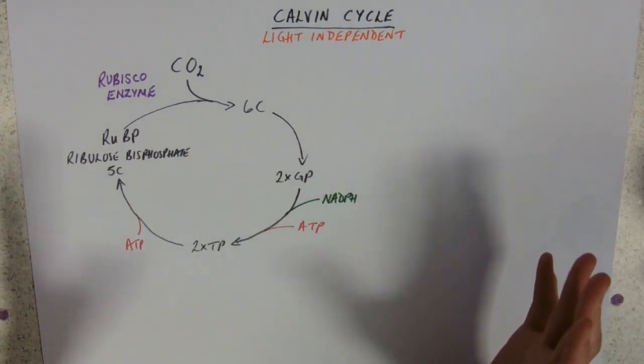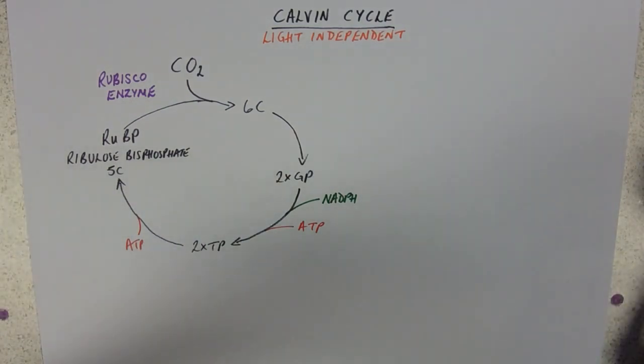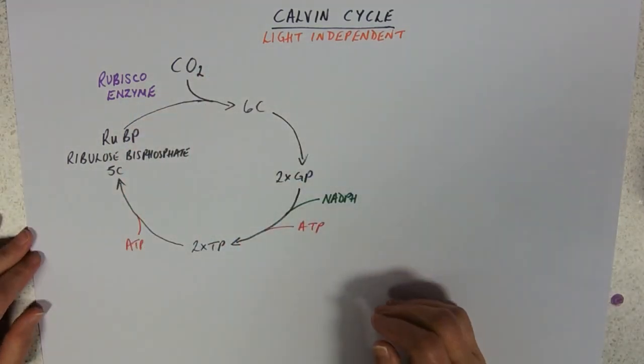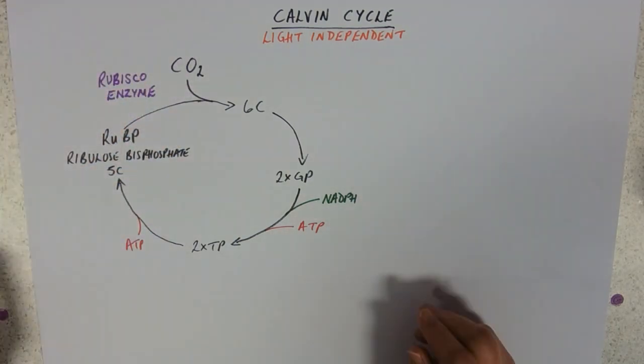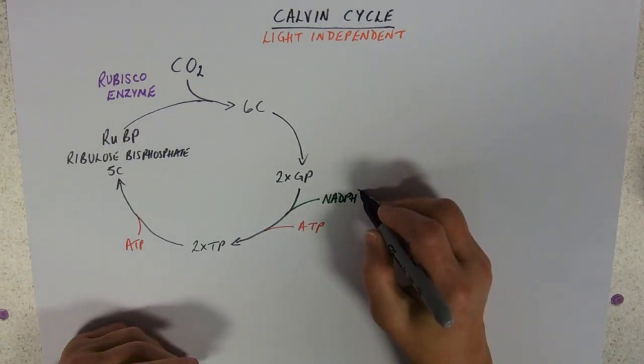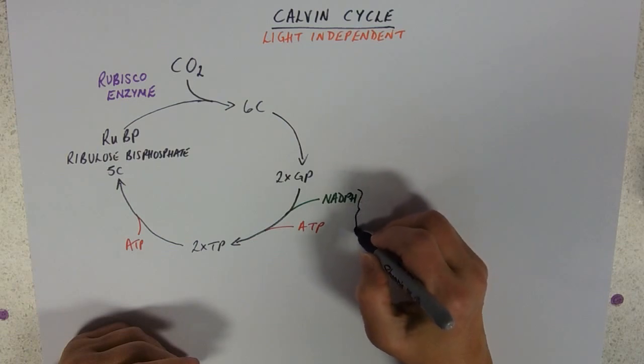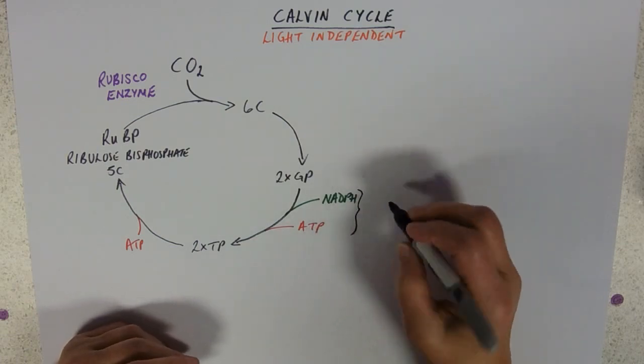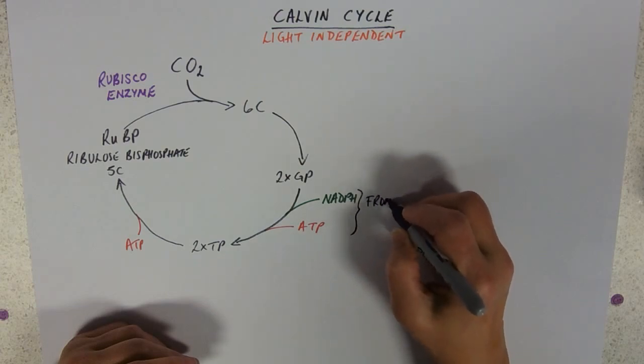So when you look at it the first thing we notice is it's a circle which is lovely and we've got chemicals going round like we're doing Krebs cycle and we've got stuff coming in. I think if you've learnt your light dependent reactions, you will realize that these two things going in, the NADPH and the ATP, are from the light dependent.